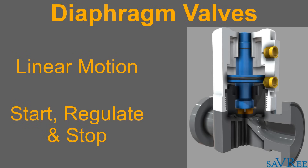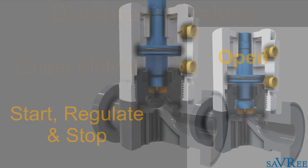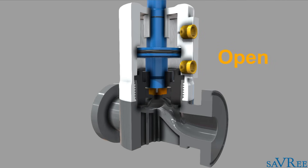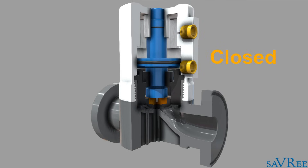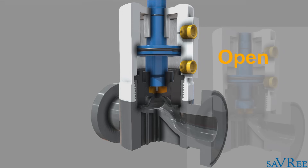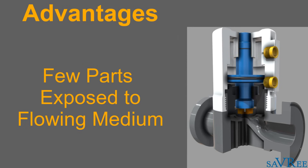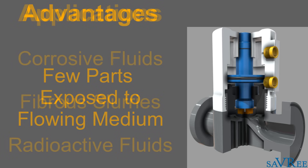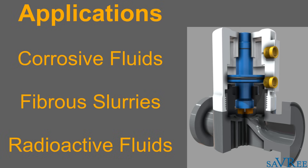A diaphragm valve is a linear motion type valve that is used to start, regulate or stop fluid flow. A flexible diaphragm can be raised or lowered onto the valve seat in order to open or close the valve. A great advantage with the diaphragm type valve is that very few parts are exposed to the flowing medium. This makes it particularly well suited for handling corrosive fluids, fibrous slurries, radioactive fluids, or other fluids that must remain free from contamination.